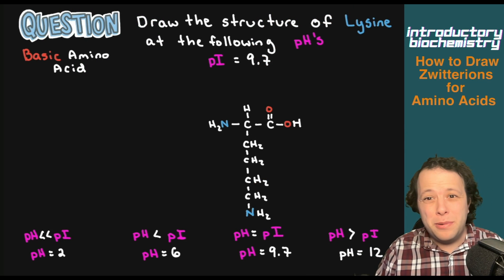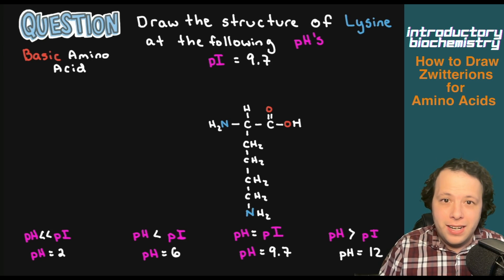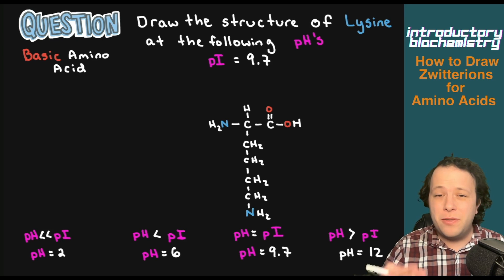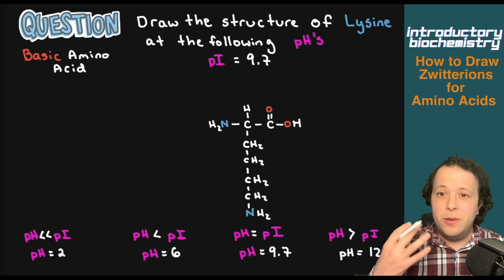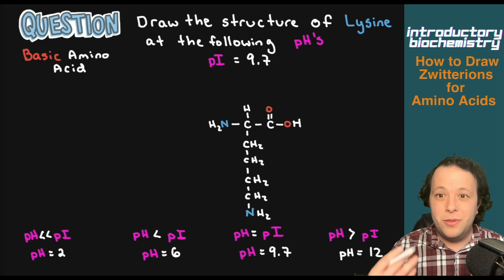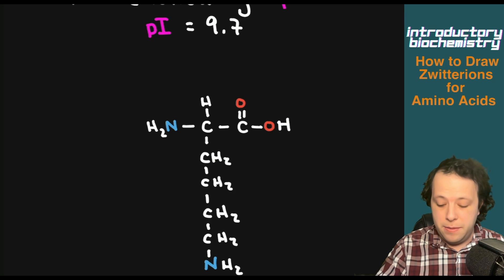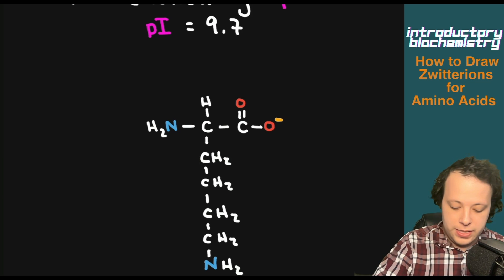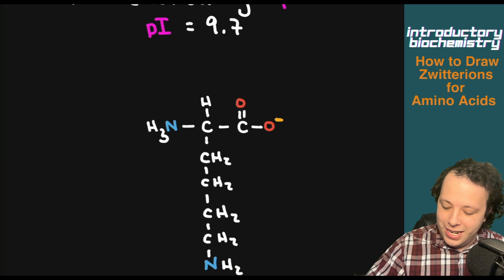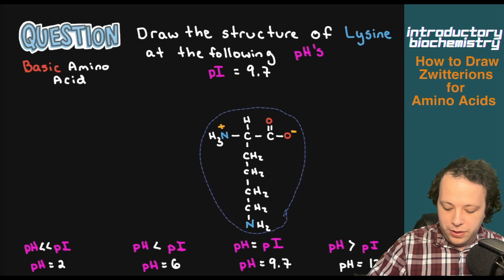Let's practice with an example. Draw the structure of lysine at the following pHs — the PI is equal to 9.7, meaning that is considered neutral for this amino acid. The structure drawn here is what it looks like under physiological conditions, where the zwitterion comes into play. For the zwitterion: the acid donates the proton, giving a negative charge on the oxygen, and that hydrogen is added to the amino group giving a positive charge on our nitrogen.